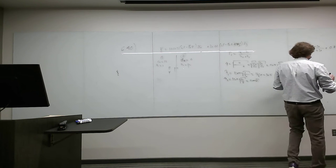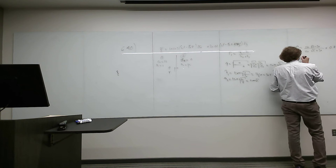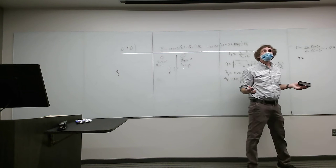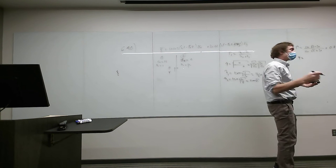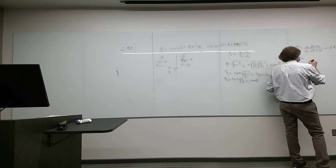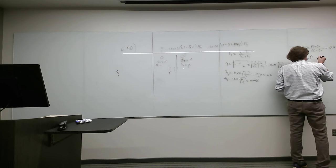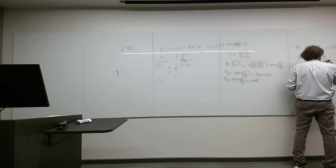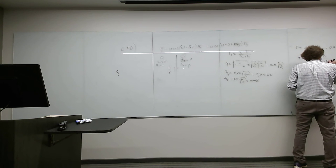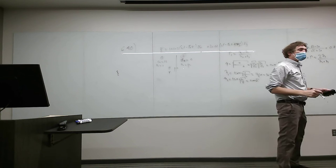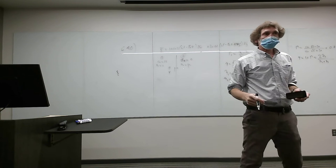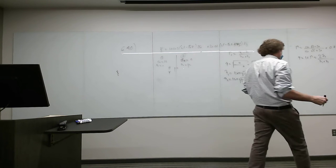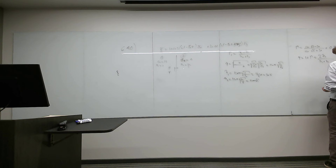The transmission coefficient is either 1 plus the reflection coefficient, or it's 2-eta-2 over eta-2 plus eta-1 — these two are identical. Since we have the reflection coefficient, I'll use it: tau equals 1 plus 0.7, which is 1.7.